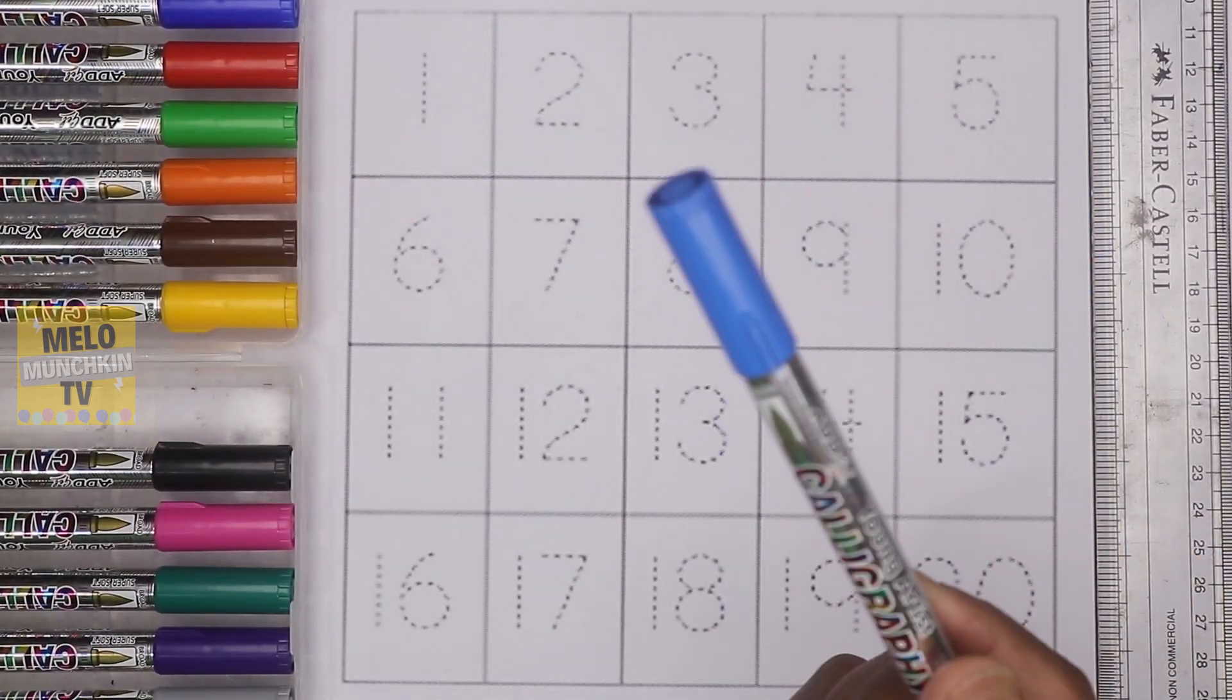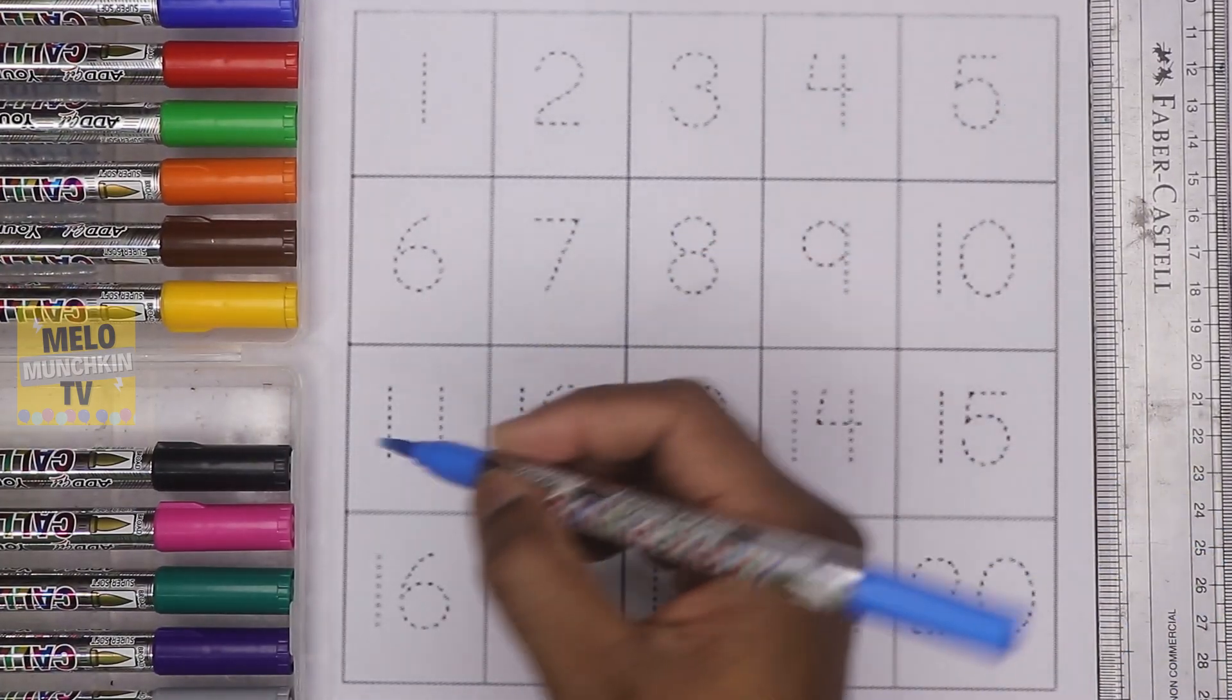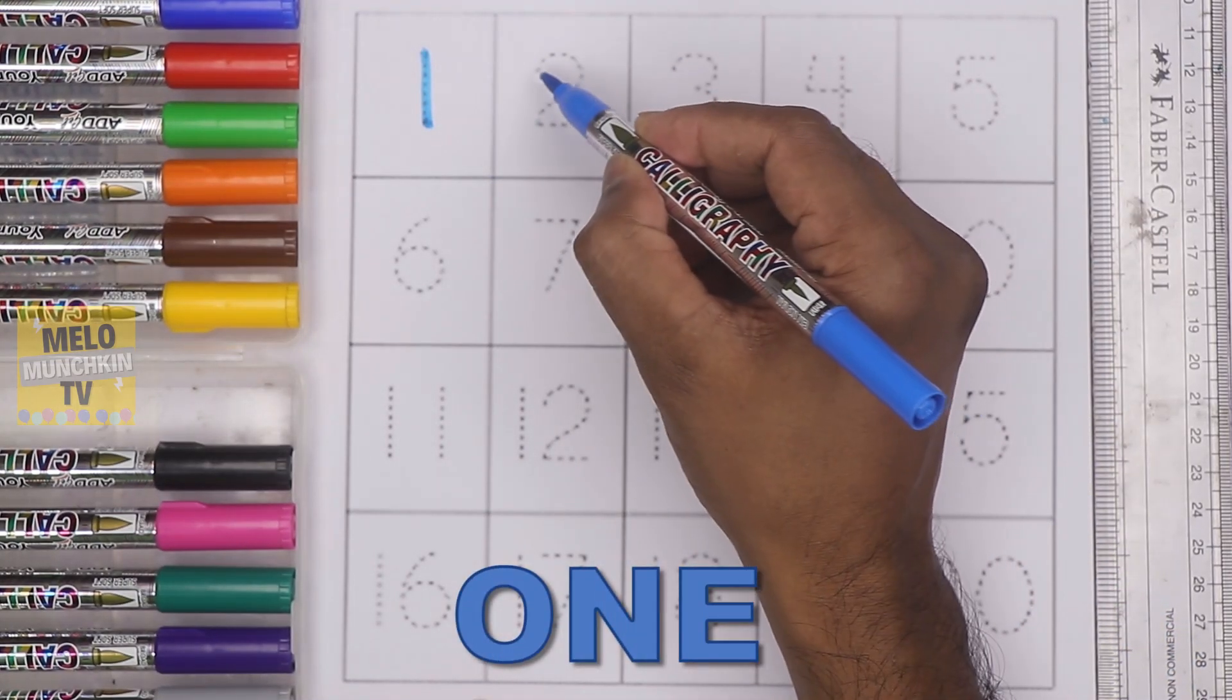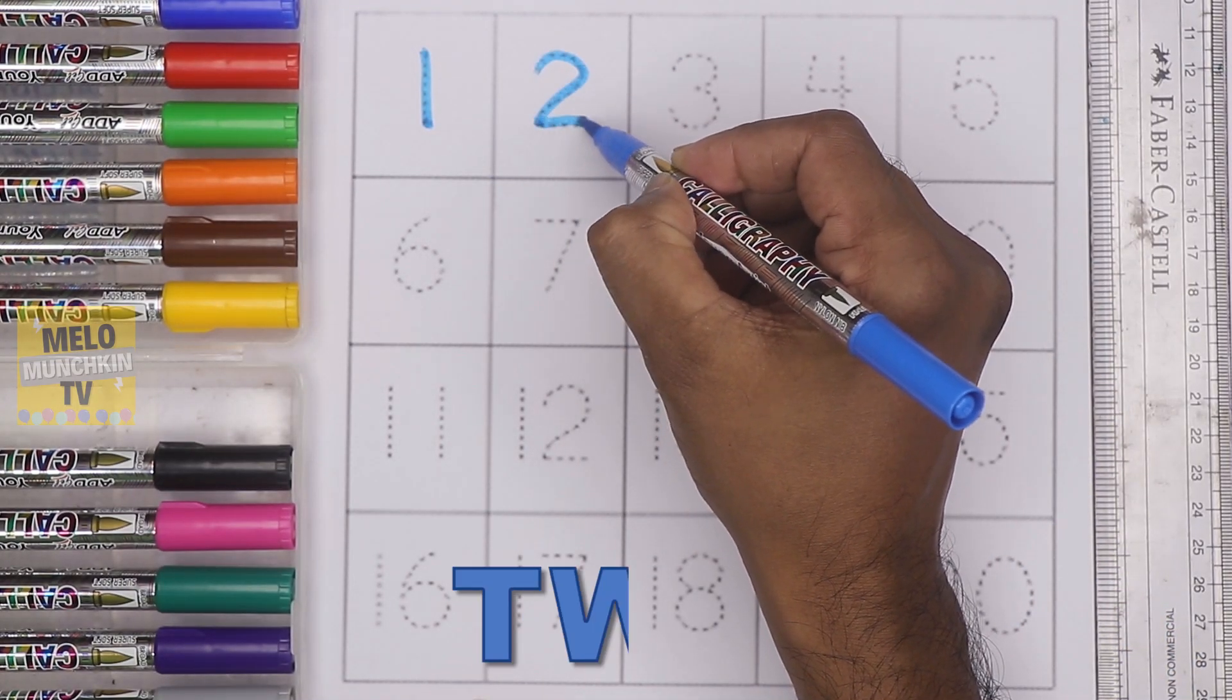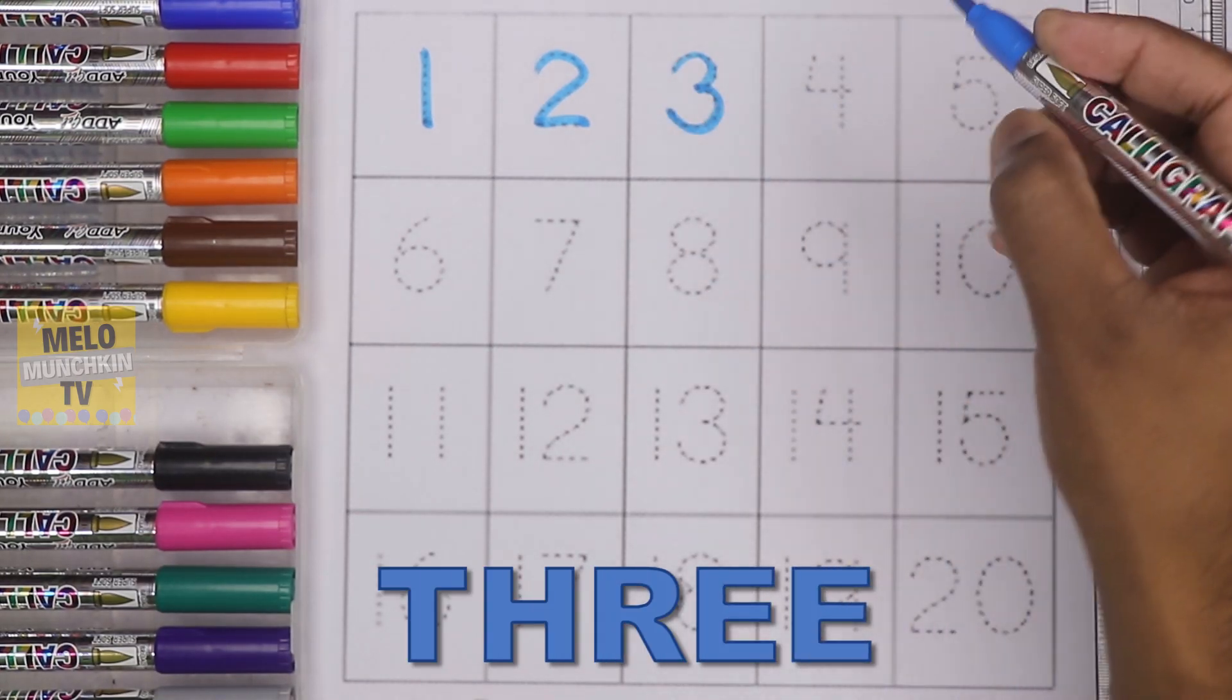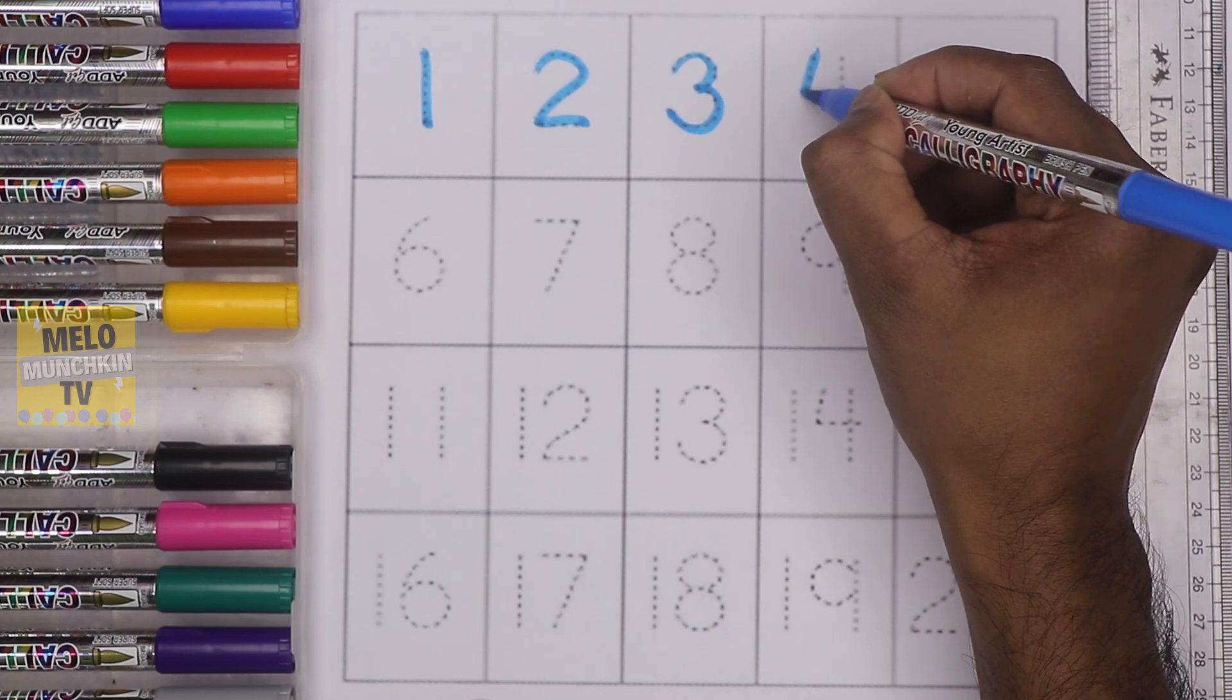I'll write the first line with this color. This is number one, O-N-E, one. This is number two, T-W-O, two. This one is number three, T-H-R-E-E, three. This is number four, F-O-U-R, four.